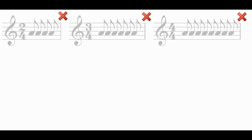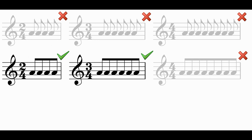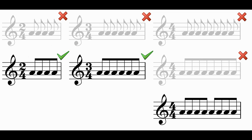In order to make quavers easier to read we beam them together instead of writing each quaver with its own tail. In our 2/4 and 3/4 bars we can beam all of the quavers together. If we were to beam all of the quavers of a 4/4 bar together we would have eight notes joined together, and this becomes too much to process. Instead we beam the first four quavers and the last four quavers together.